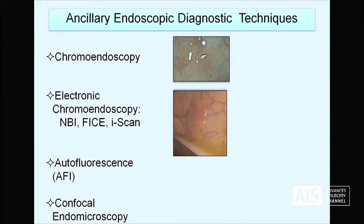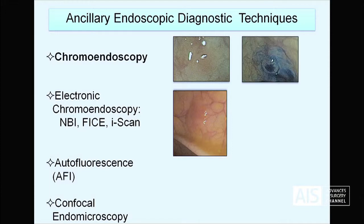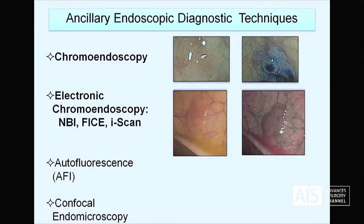In that sense, endoscopy has many ancillary techniques that will help us to do all those things. The first one is chromoendoscopy, which is a very widely used technique — it simply uses a dye to better delineate the lesions. The second one is electronic chromoendoscopy, where we play with the light of the endoscope to also enhance lesions, as you can see here in the picture. There are other techniques but we don't have time to go into them.